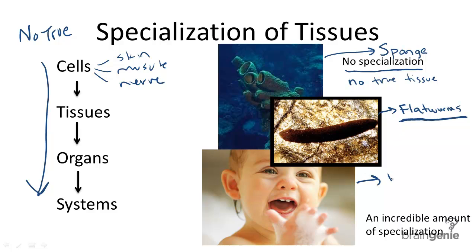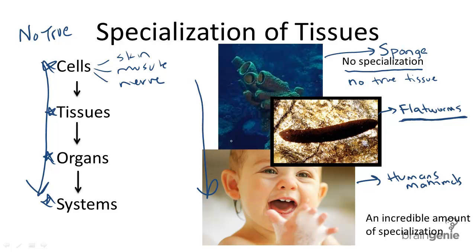Humans and mammals got luckier — they exhibit all forms of specialization, every single one seen here on the left. Mammals have cells, tissues, complex organs, and complex systems. The more complex the organism is in terms of its anatomy, the more likely it is to be further along the evolutionary chain.